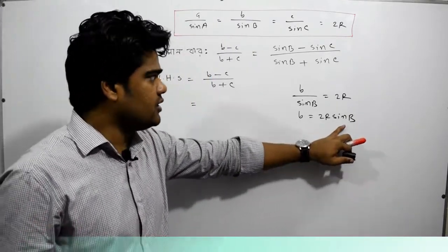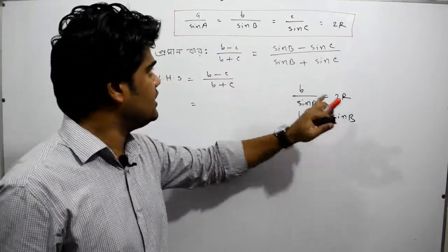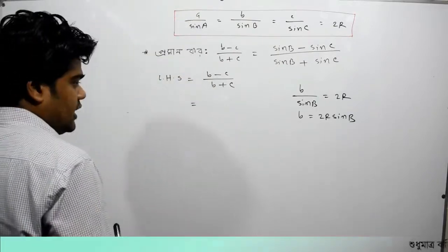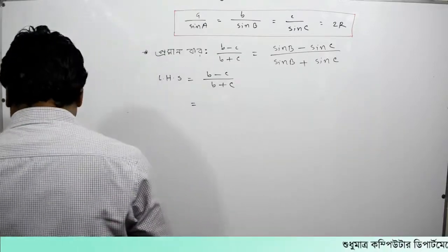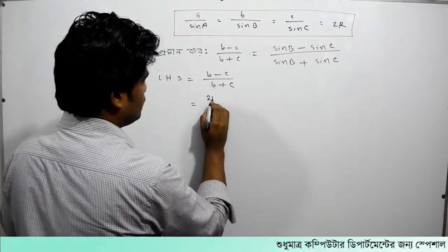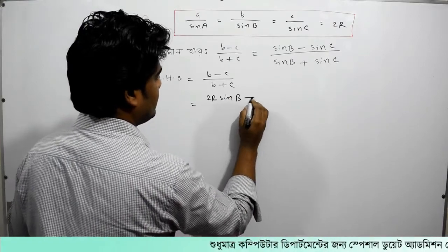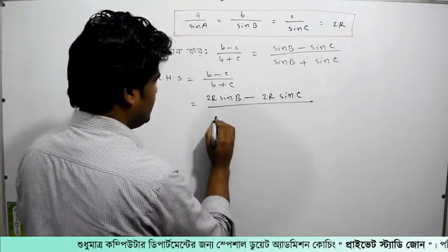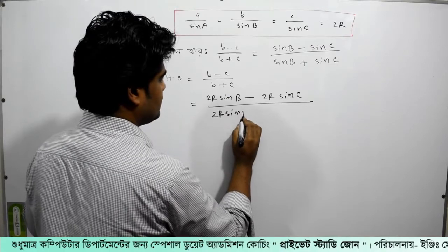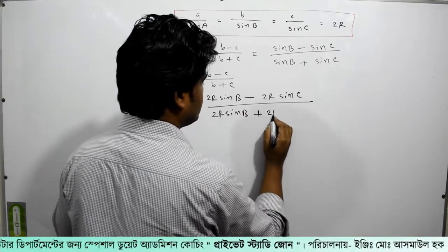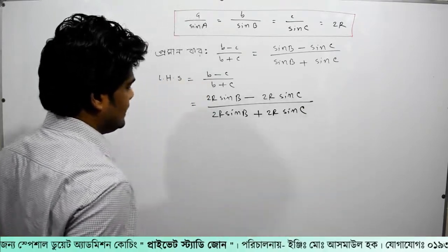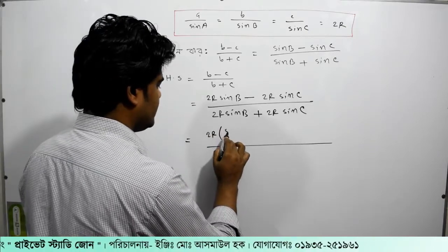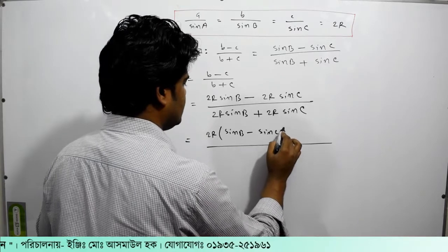I write B equal to 2R sin B, so we have to write A equal to 2R sin A, C equal to 2R sin C. So, we have to write B equal to 2R sin B minus C equal to 2R sin C divided by B equal to 2R sin B plus C equal to 2R sin C. So, we have to write 2R sin B minus sin C.